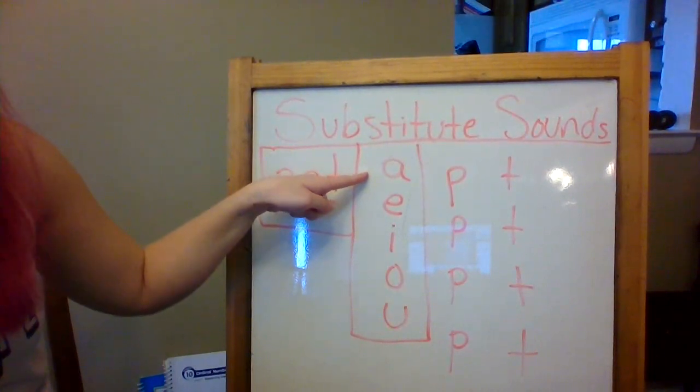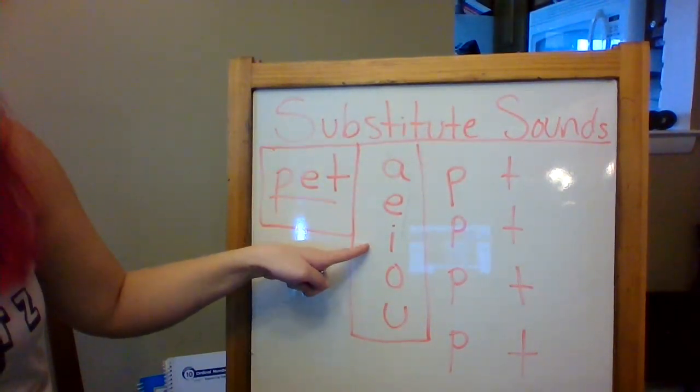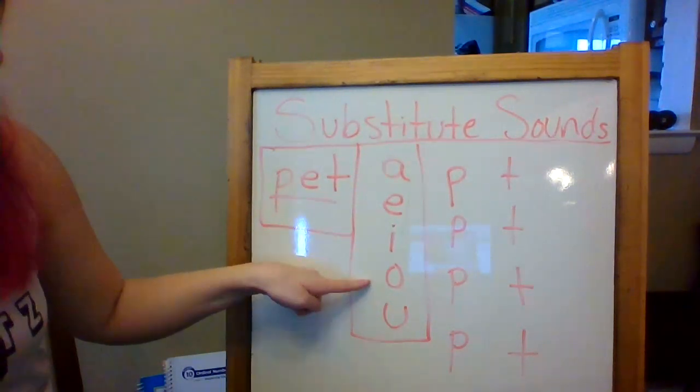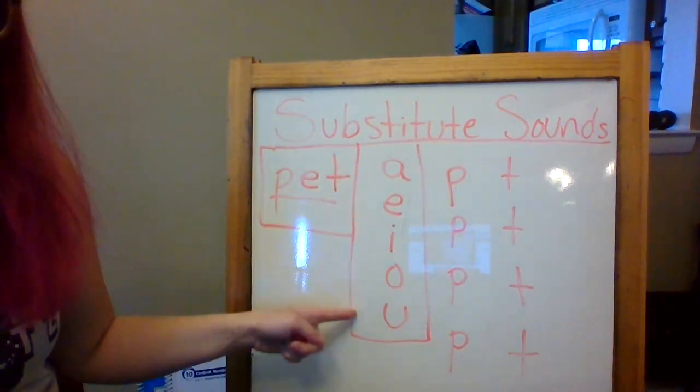A says ah, ah. E says eh, eh. I says ih, ih. O says ah, ah. And U says uh, uh. And those are the short vowel sounds.